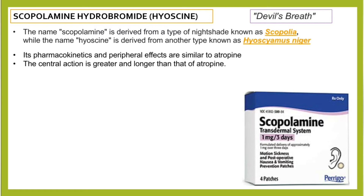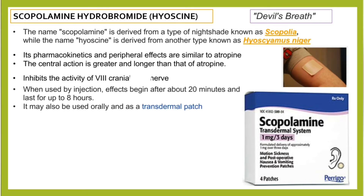The central action of scopolamine is greater and longer than that of atropine. This drug inhibits the activity of the eighth pair of cranial nerves. When used by injection, the effects begin after about 20 minutes and will last for up to eight hours. It may also be used orally or as transdermal patches.